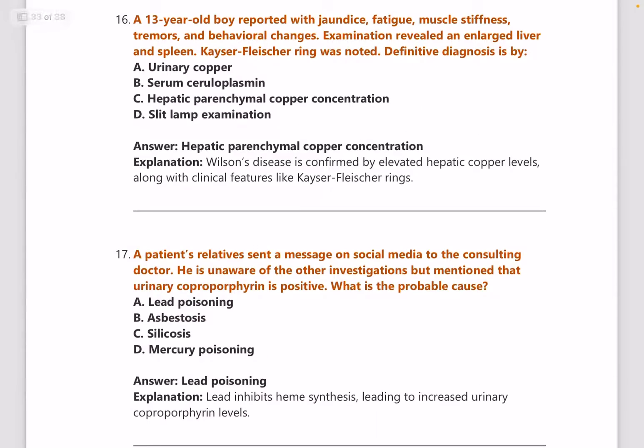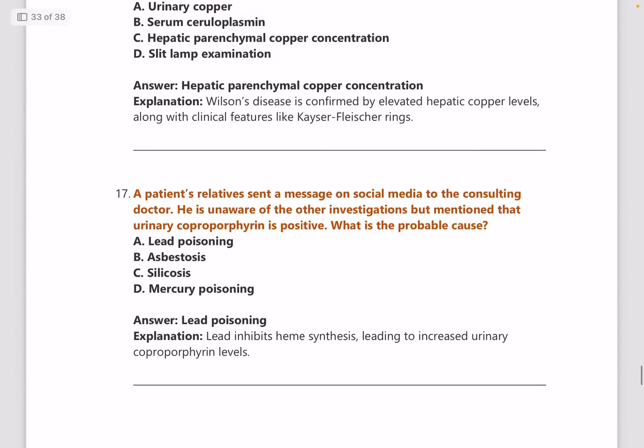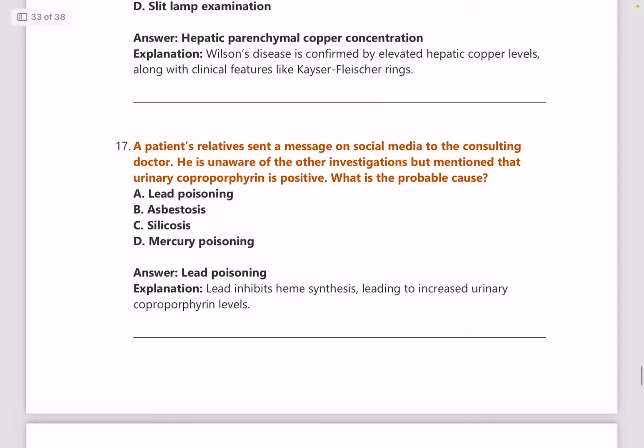Next: a 13-year-old boy with jaundice, fatigue, muscle stiffness, tremors, behavioral changes, enlarged liver and spleen, and Kayser-Fleischer rings — what is the diagnosis? Answer: hepatic parenchymal copper concentration, because in Wilson's disease, confirmation is by hepatic copper levels.